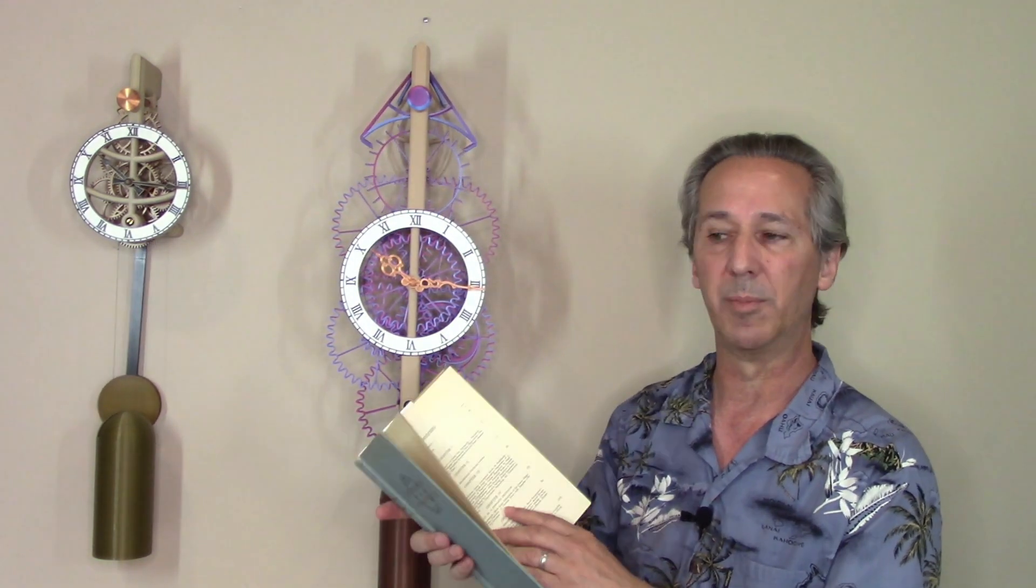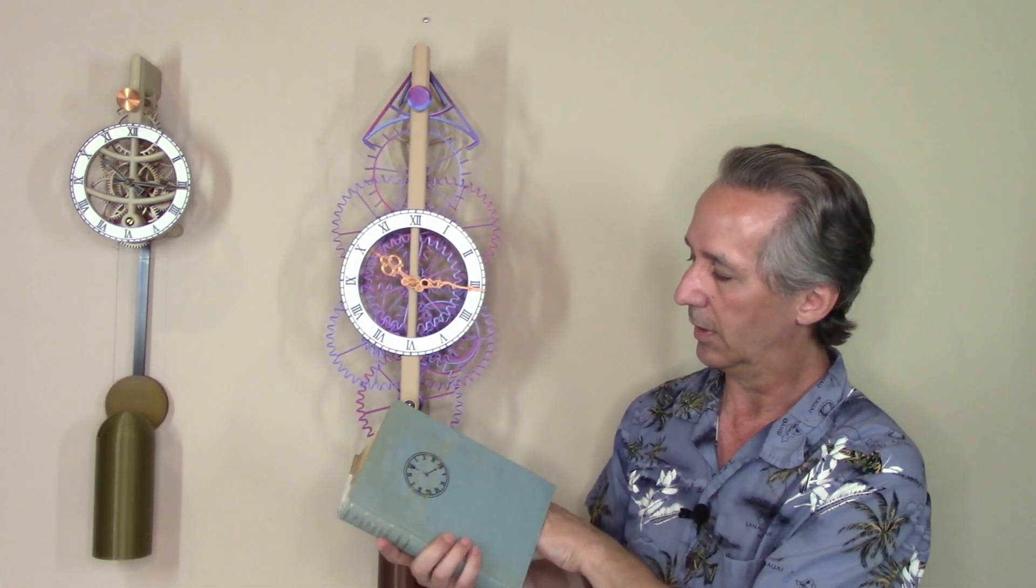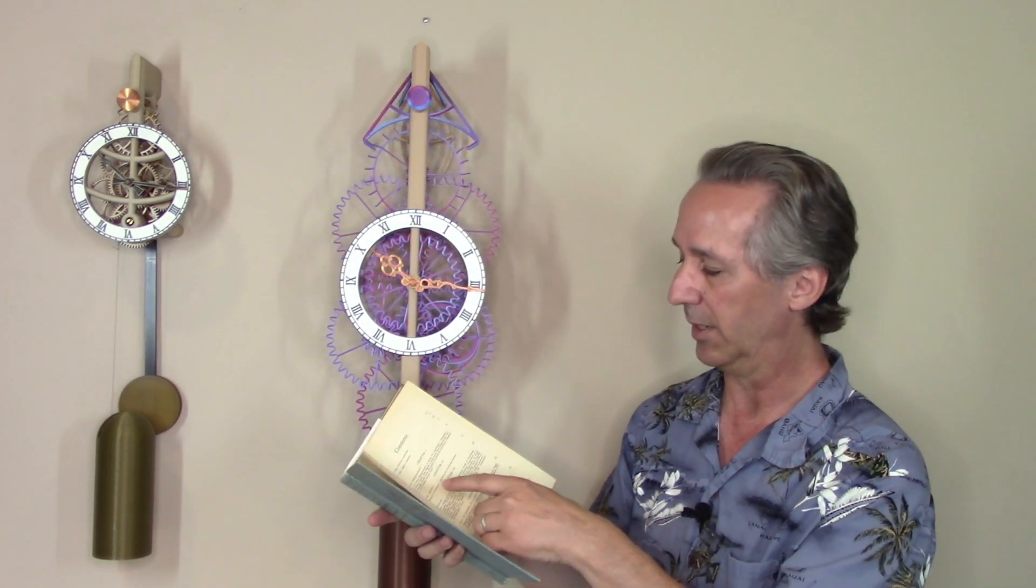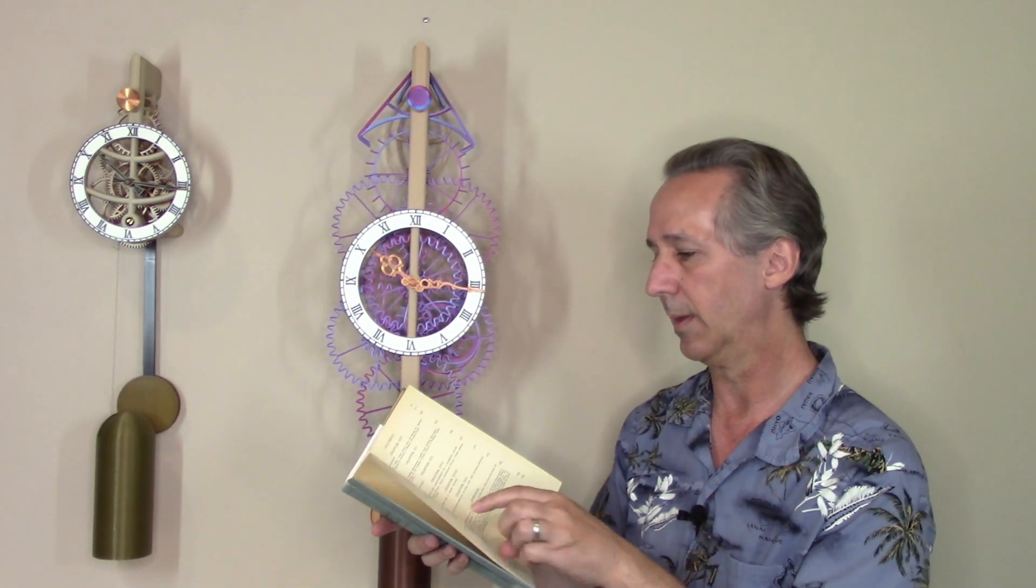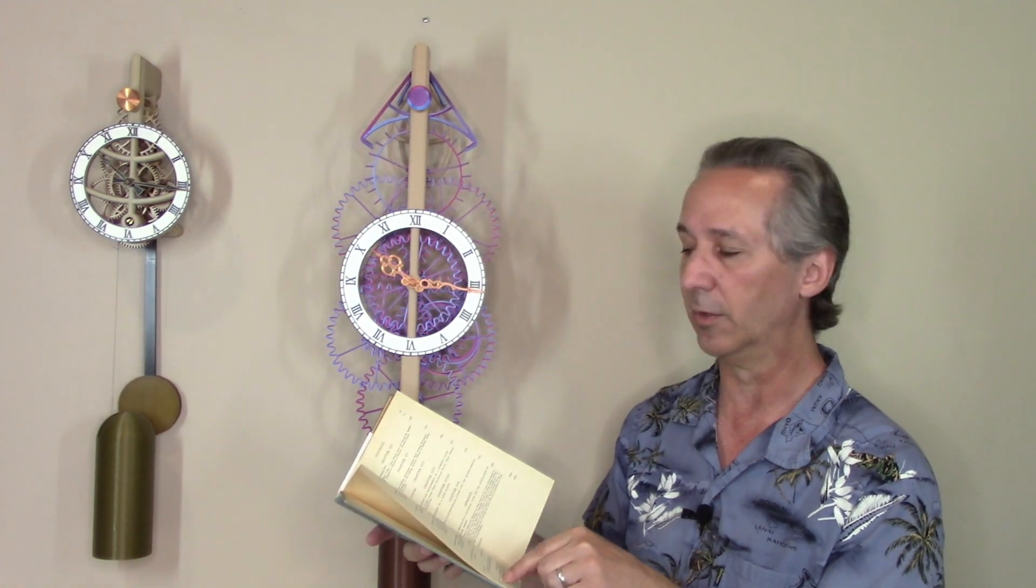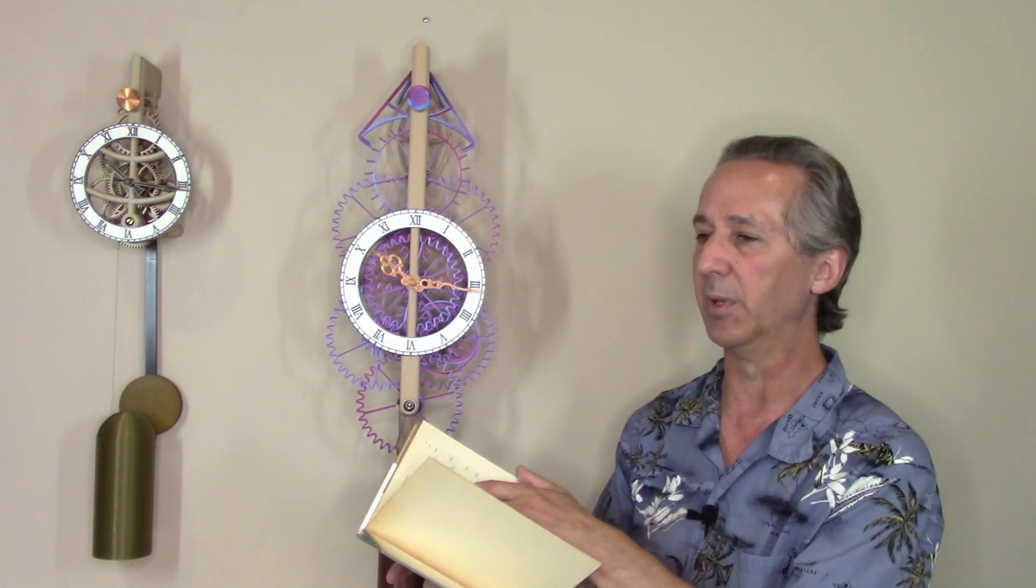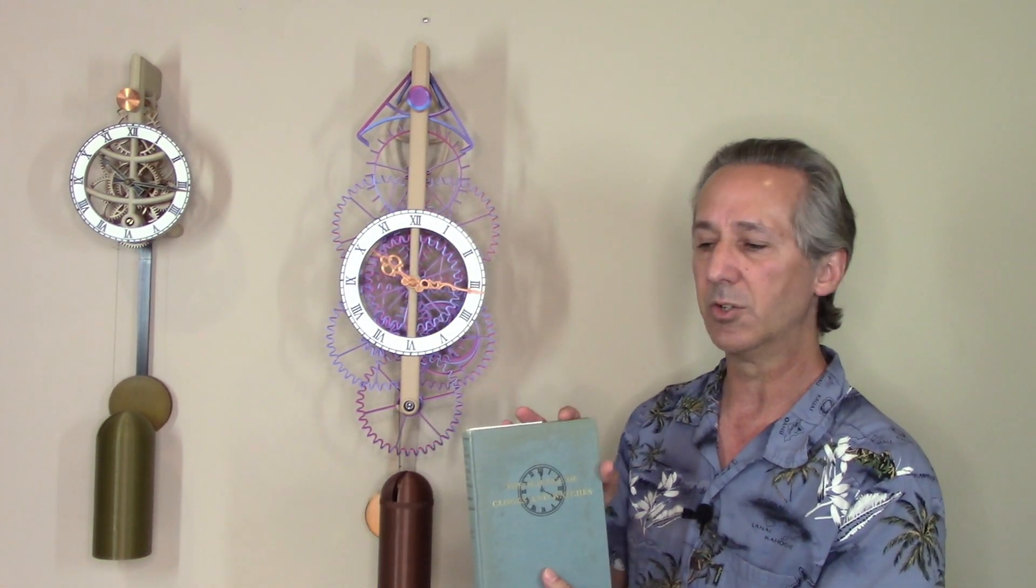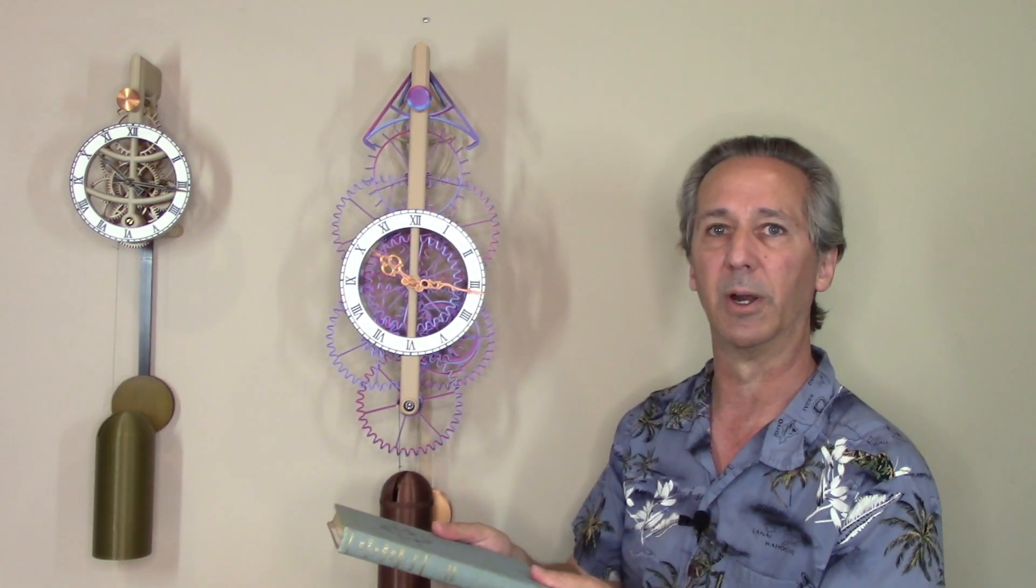One thing about these books is they're all broken up into chapters. The Science of Clocks and Watches has a chapter on describing time, the pendulum, the escapement, and then the gear trains and the weights and springs. So each of those chapters is even broken up into subsections, going along with the concept of breaking each component into smaller parts and then solving those smaller parts by themselves.